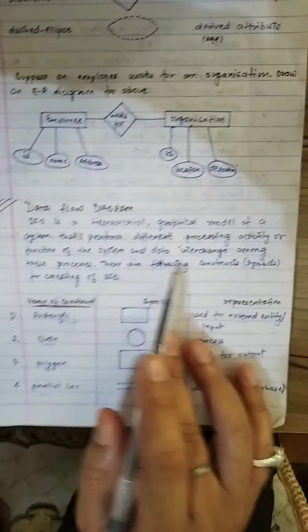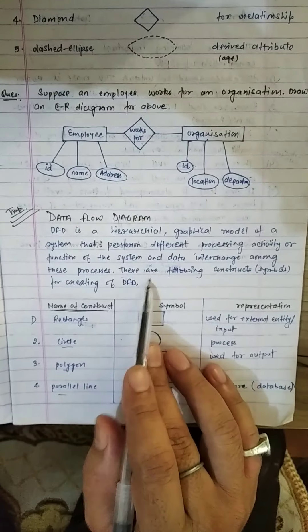Hello students. In continuation of the previous lecture, where I discussed requirement analysis tools and the ER diagram, now I am going to explain the DFD — its symbols and its working. A data flow diagram is a hierarchical graphical model of a system that performs different processing activities, functions of the system, and data interchange among these processes.